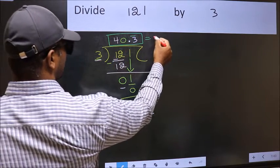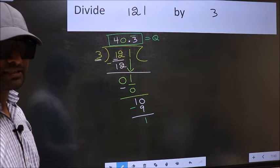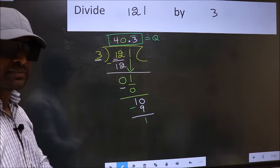So, this is our quotient. Did you understand where the mistake happens? You should not do that mistake.